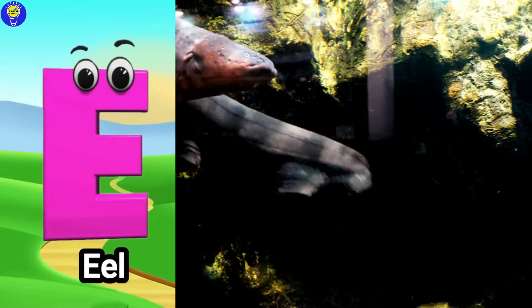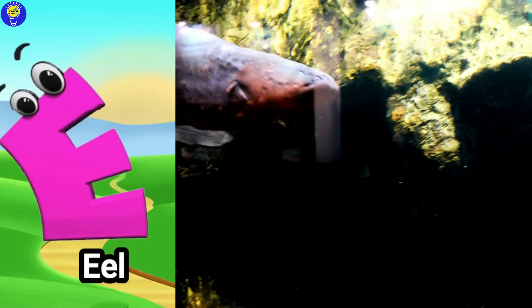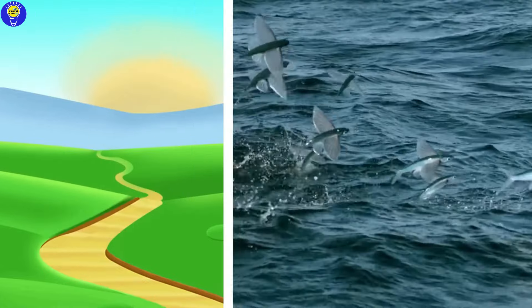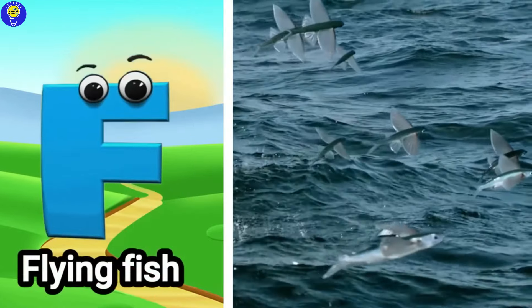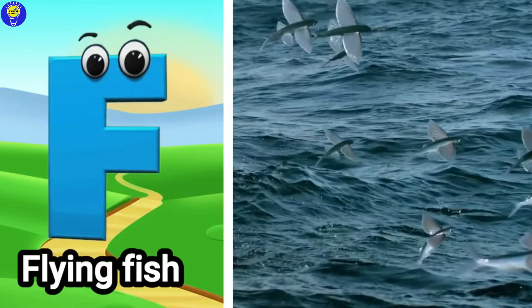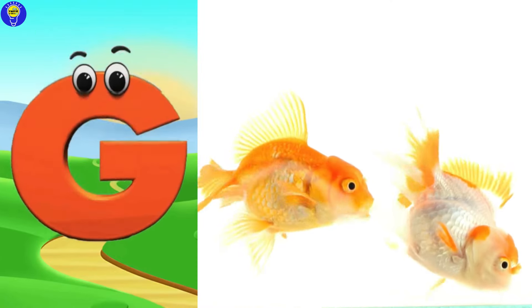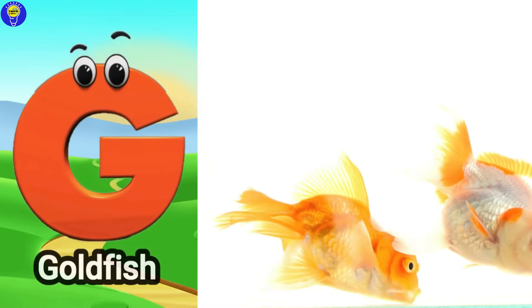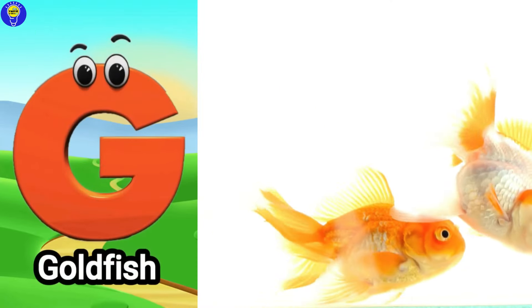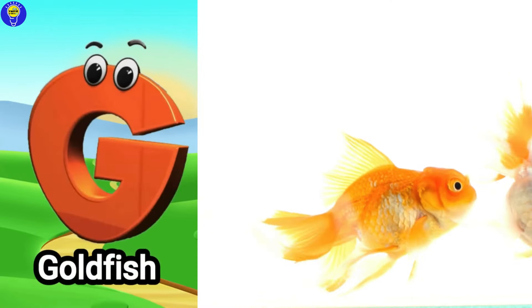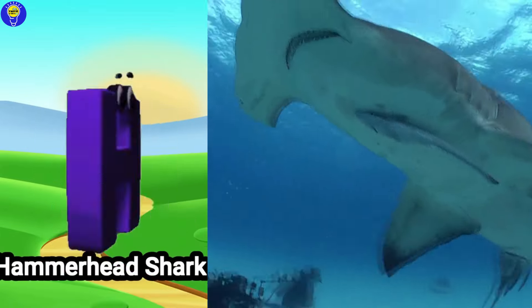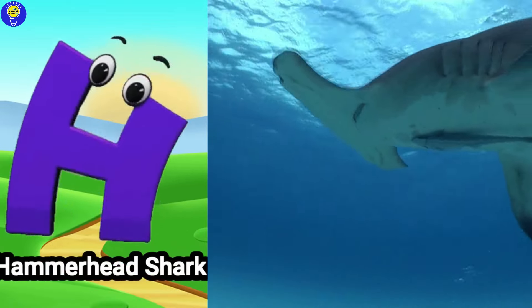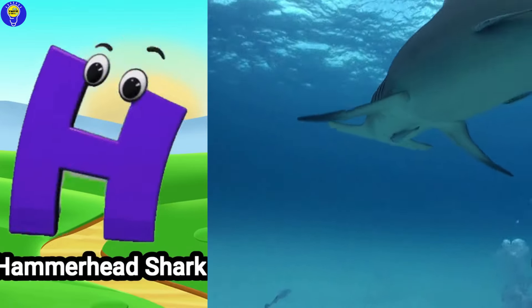E is for eel, eh, eh, eel. F is for flying fish, fuh, fuh, flying fish. G is for goldfish, guh, guh, goldfish. H is for hammerhead shark, ha, ha, hammerhead shark.